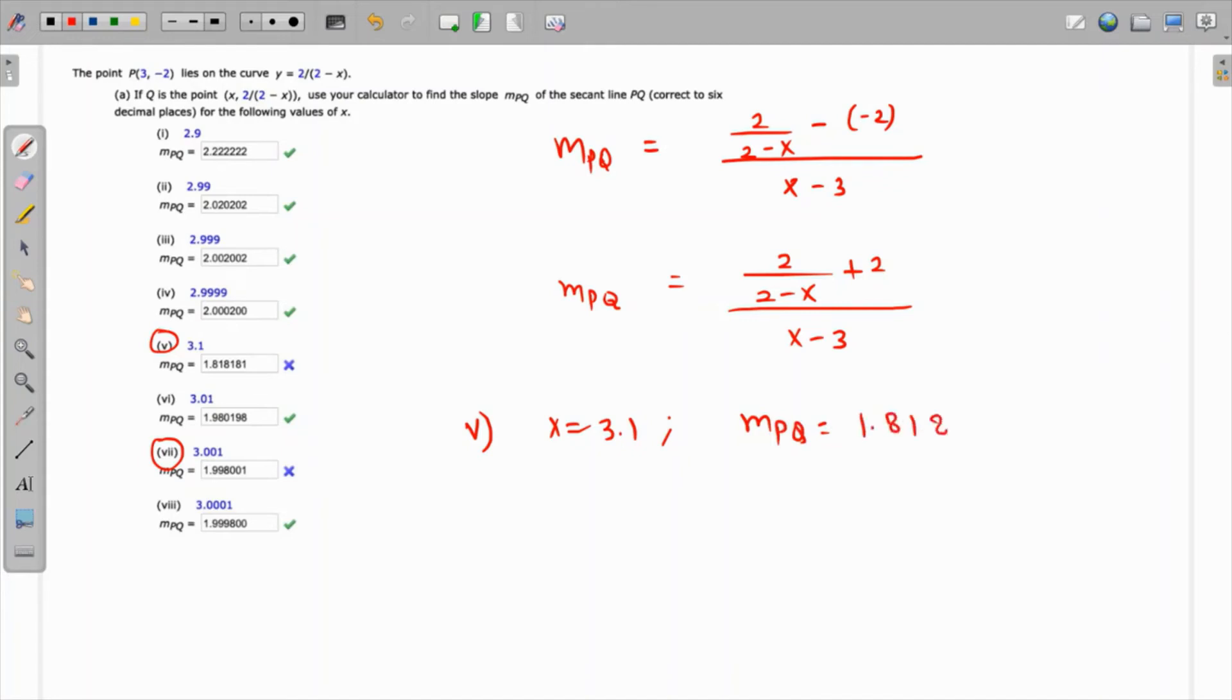Since we need to round this, this number will become 2 because the following numbers are 1-8, and because of this 8 this will turn to 2. So this is the answer to the fifth part.